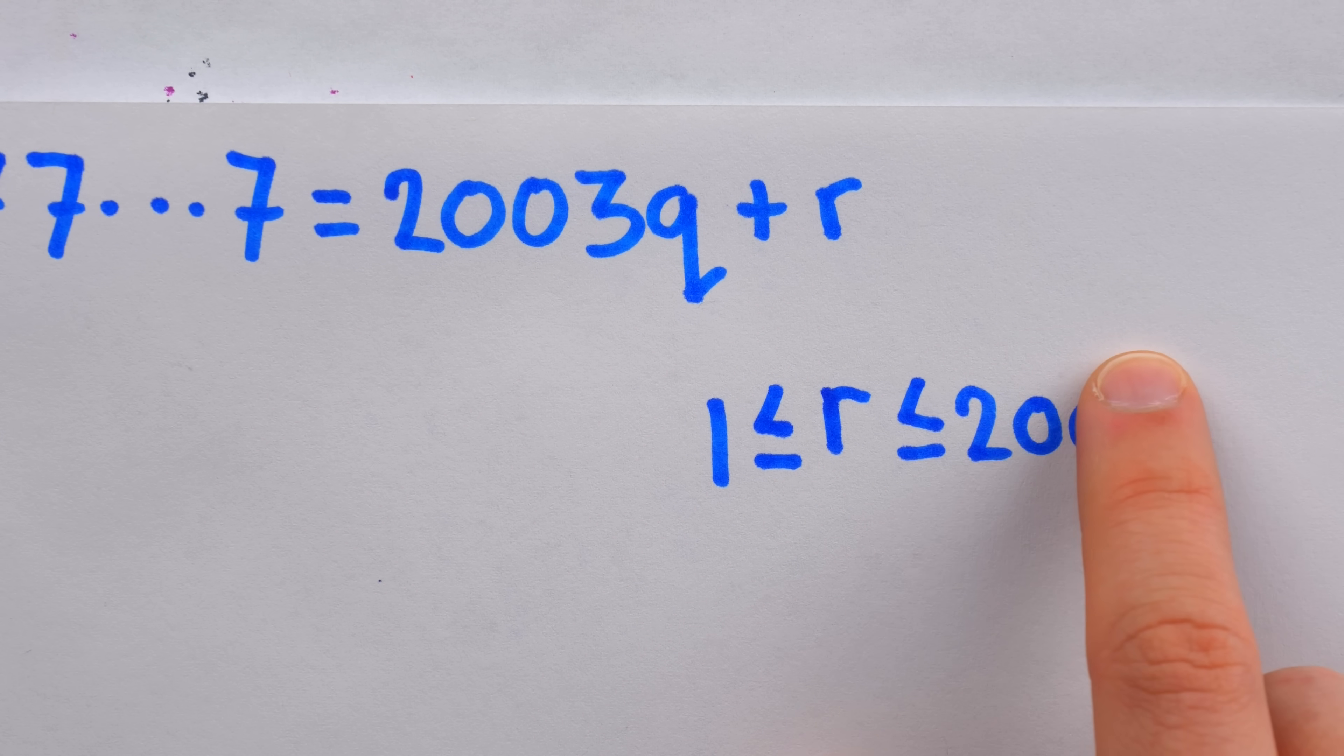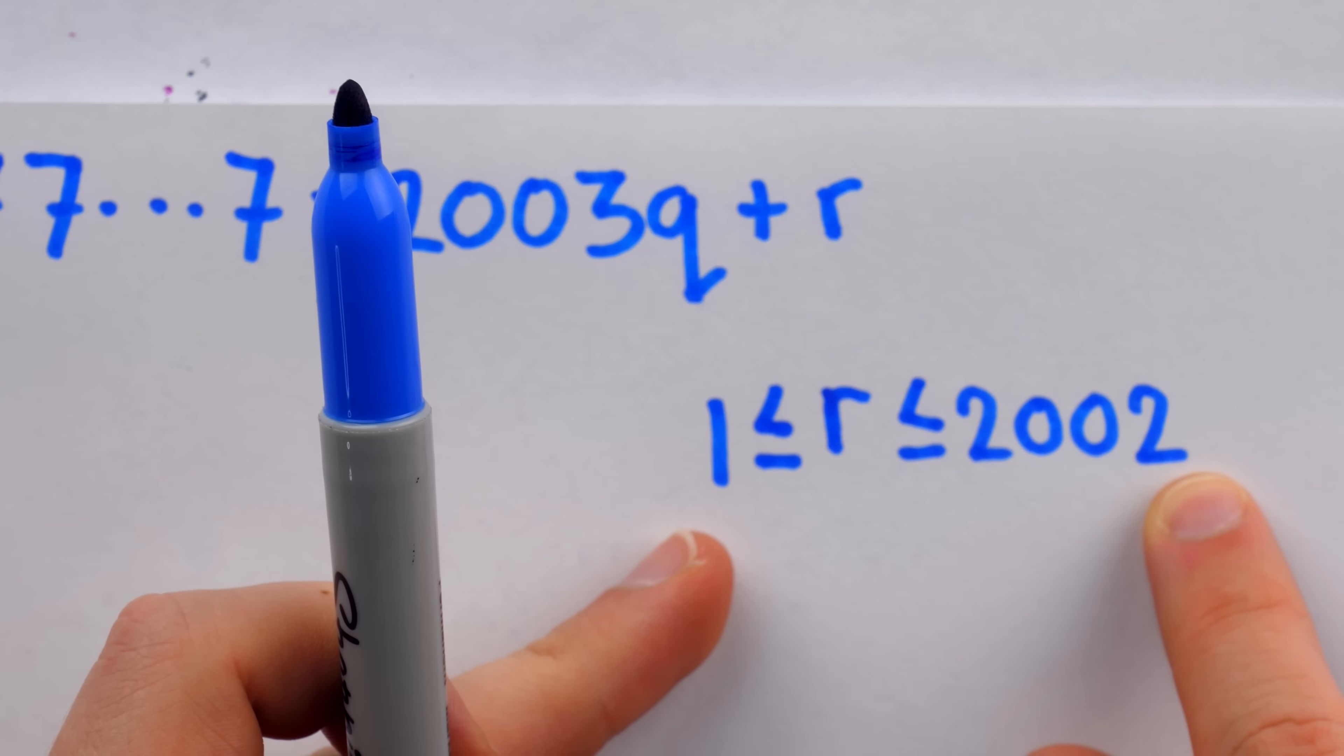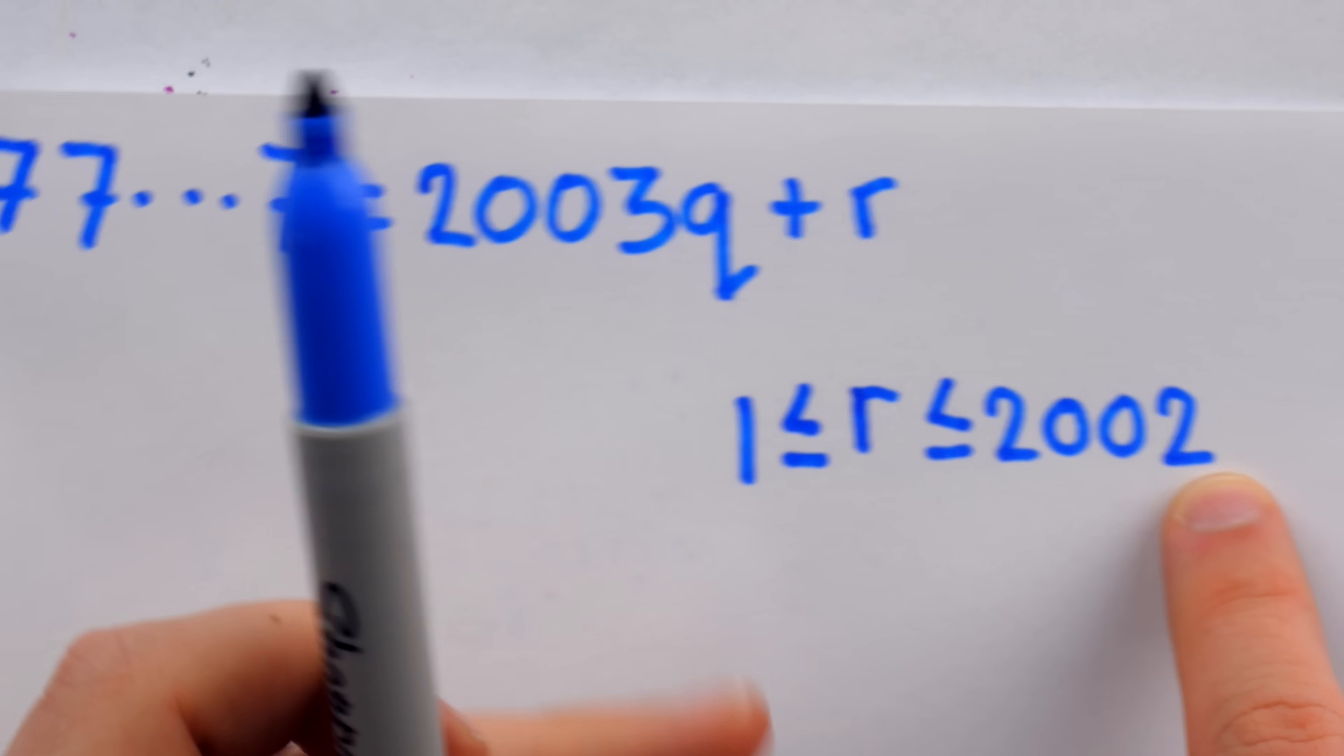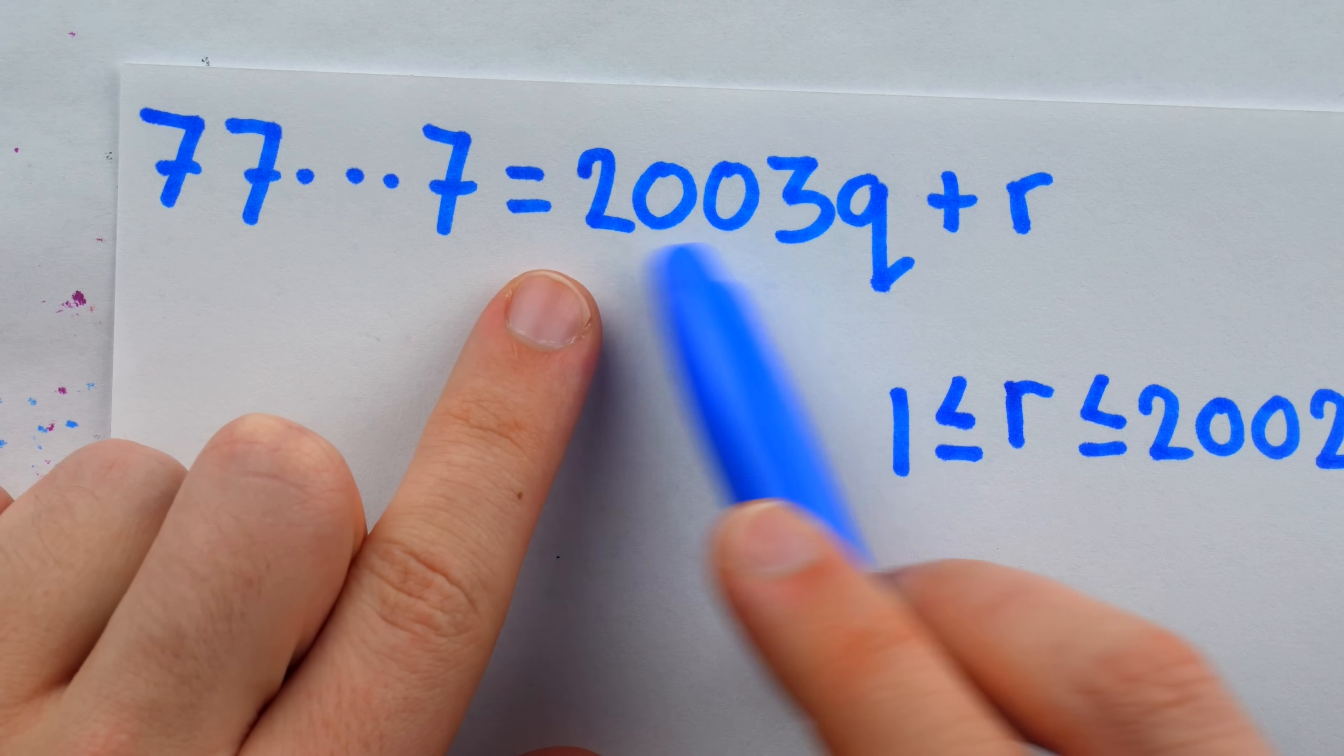So the biggest R could be is 2002. Thus, we see there are 2002 possible remainders for each term of the sequence when divided by 2003.